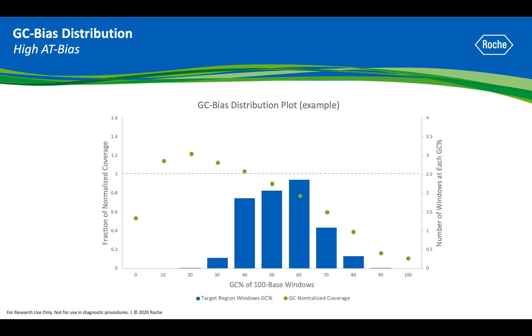Less frequently, you may see a bias towards lower GC regions. This is most likely to occur with AT-rich samples.